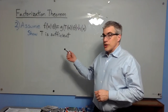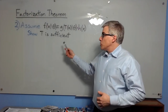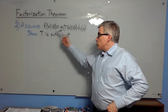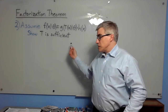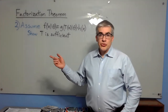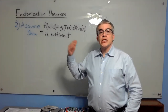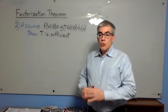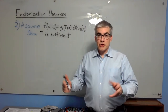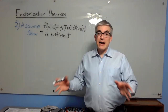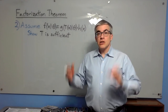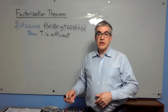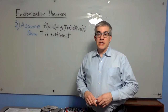Now for the other direction: we assume that the factorization holds and show that t is sufficient. This is the direction generally used when applying the factorization theorem — we take some distribution, factor it, and from that conclude we have a sufficient statistic, because it's easier than going all the way back to the definition.